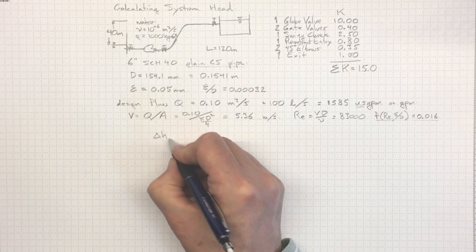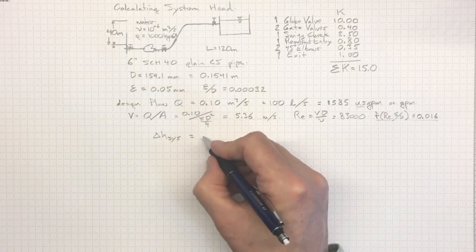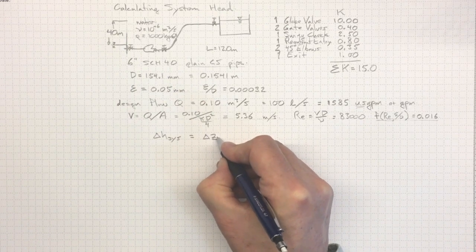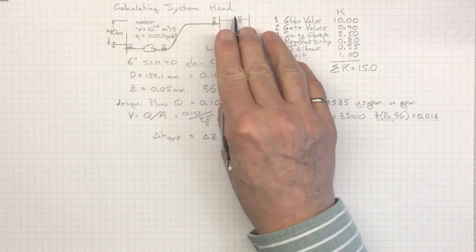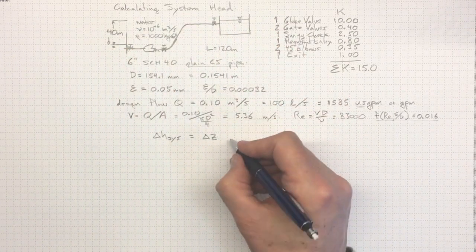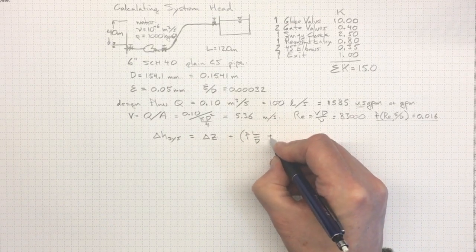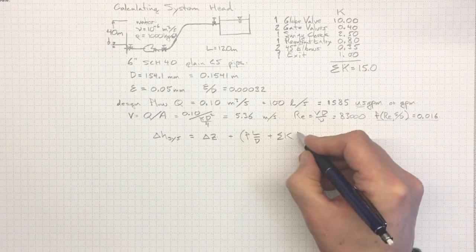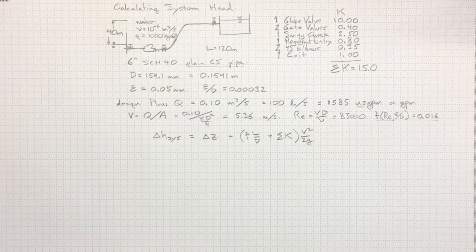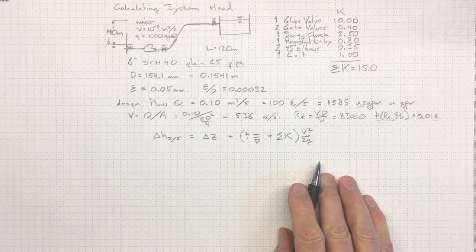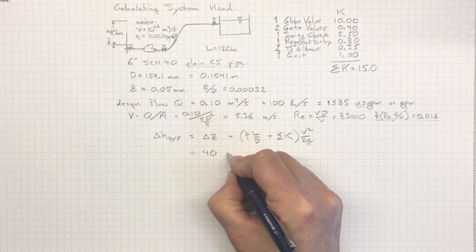So, the delta H for the system, as we saw before, it's going to depend on delta Z. There would be delta P, except in this case we've got atmospheric pressure at both these surfaces, plus F L over D, plus sigma K, all times V squared over 2G. And this is how we would have tackled the problem in the section purely on piping.